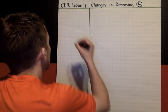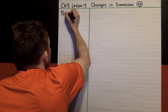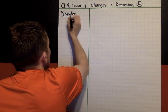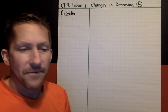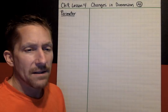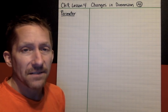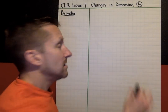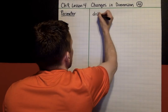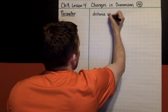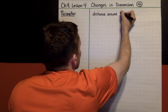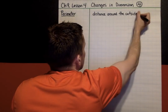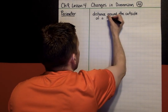Let's get started. The first word I want you to write down is perimeter. And when you hear the word perimeter, you should think fence. It's the distance around the outside of a figure, or if you build a fence around it, that's the distance of the fence — that's perimeter. Distance around the outside of a figure.